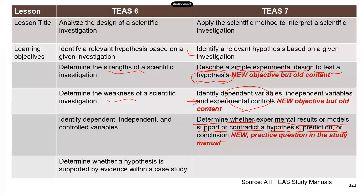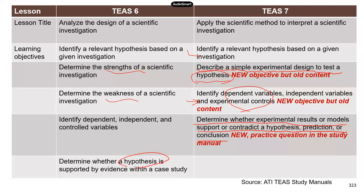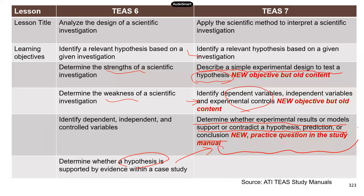Part of this content was covered in lesson 28, so there is a lot of overlap. In TEAS 6, hypothesis was mentioned too, and basically you need to be able to tell whether a hypothesis is supported by the evidence or not — which is exactly the same as this last objective in TEAS 7: just decide whether the data, the results, the models support or contradict the hypothesis.